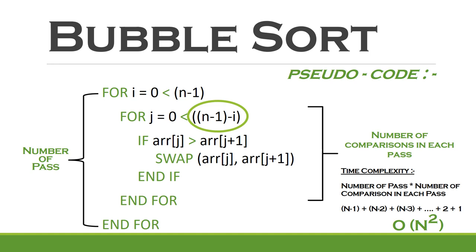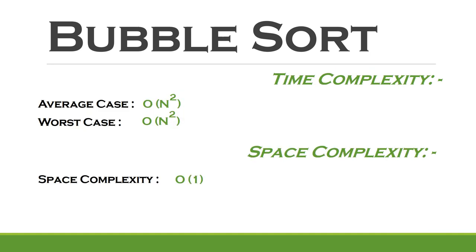But in this case also, the time complexity is O of n square. As we have already seen, both average and worst case time complexity of bubble sort is O of n square. And since there is no extra space consumed while running the algorithm, the space complexity is constant.